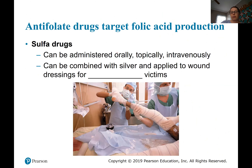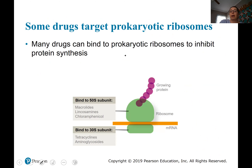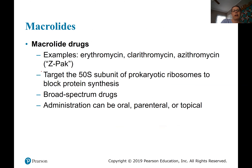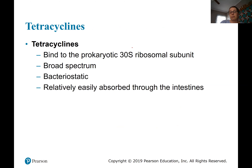Sulfadrox can be given through a few different routes and can be combined with silver to help burn patients. Some drugs attack the ribosomes, affecting protein production. Ribosomes have a large and small subunit — some drugs attack the large subunit, some the small. The Z-Pak, a macrolide, attacks the large ribosome subunit. Clindamycin is another example. Tetracycline attacks the small subunit; it's broad spectrum and bacteriostatic, preventing reproduction.